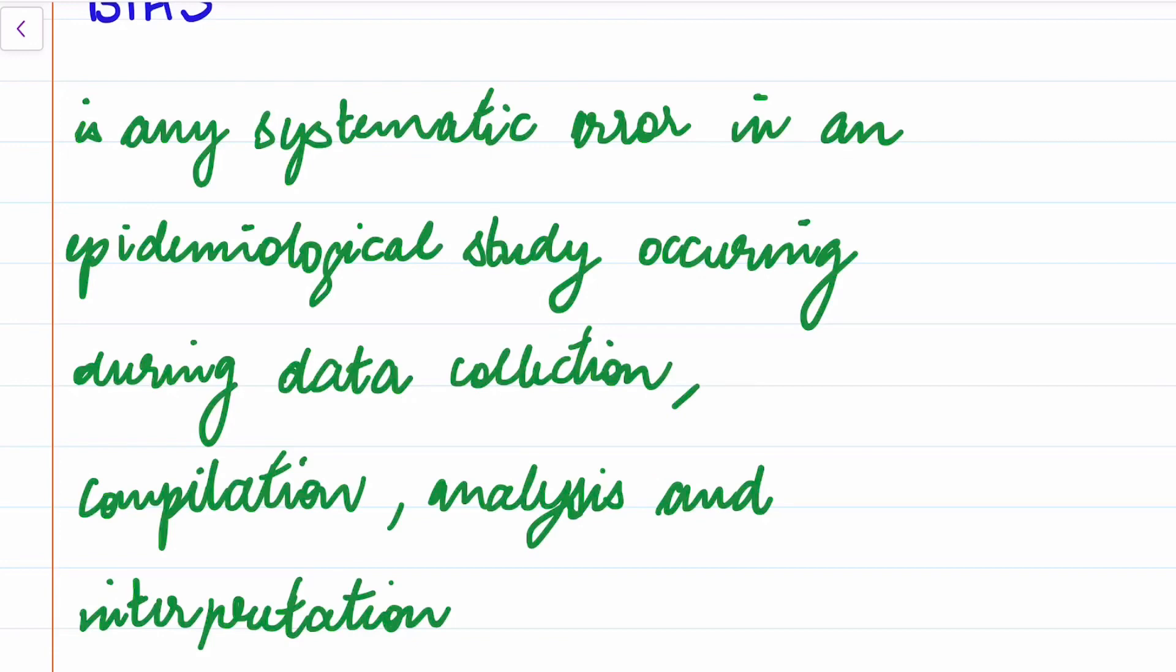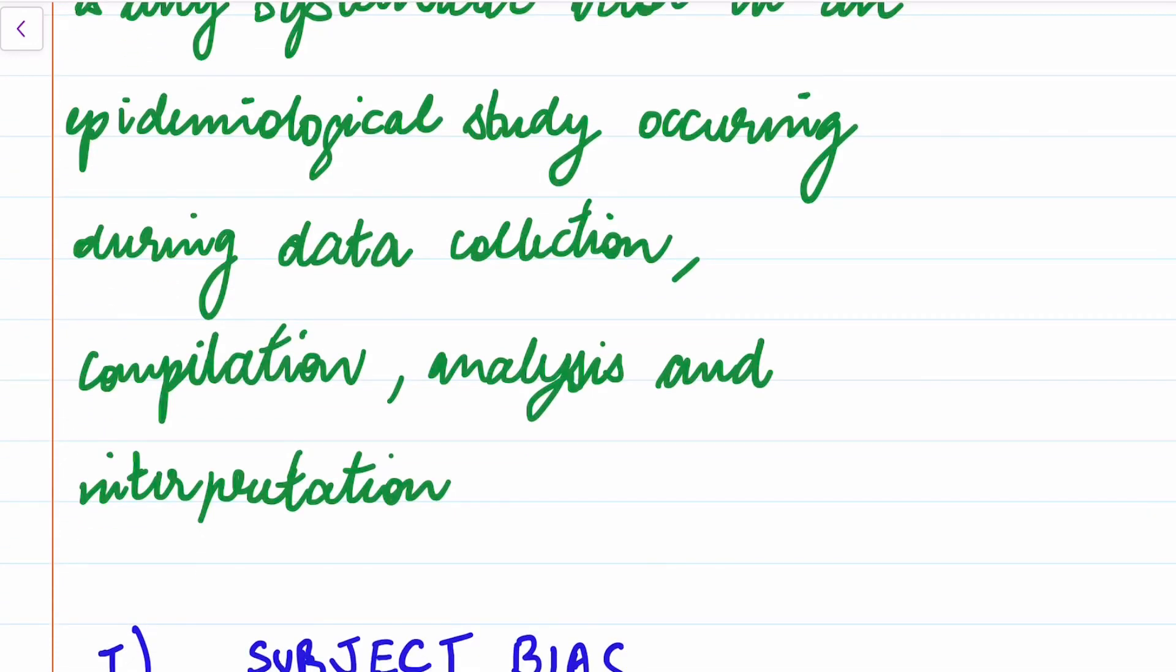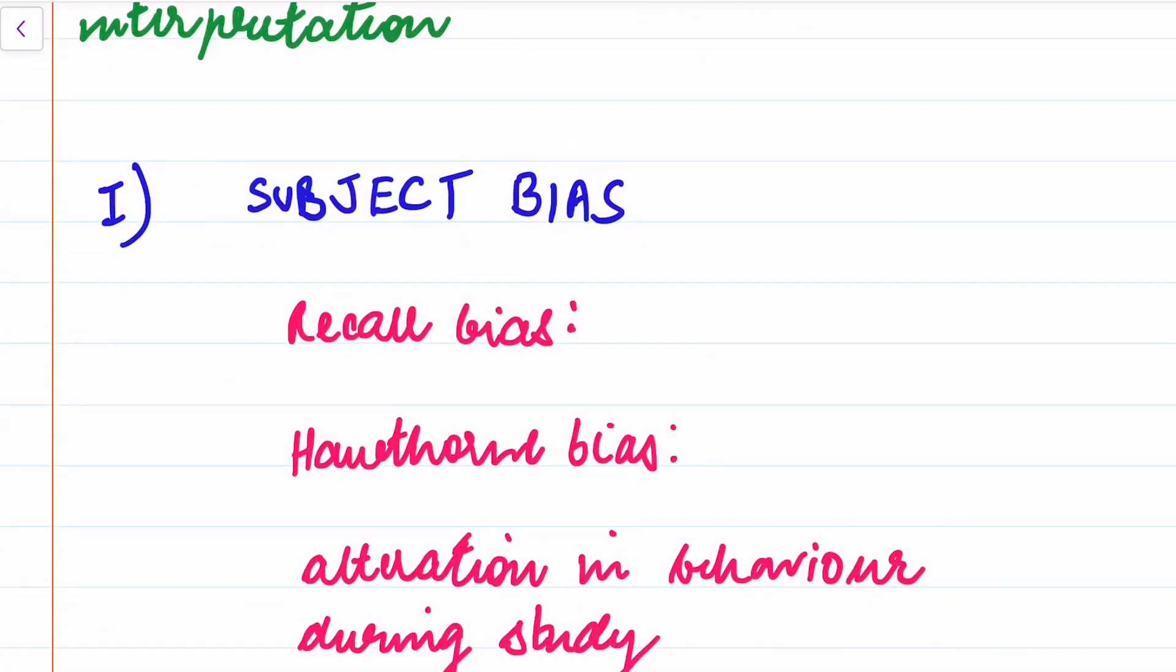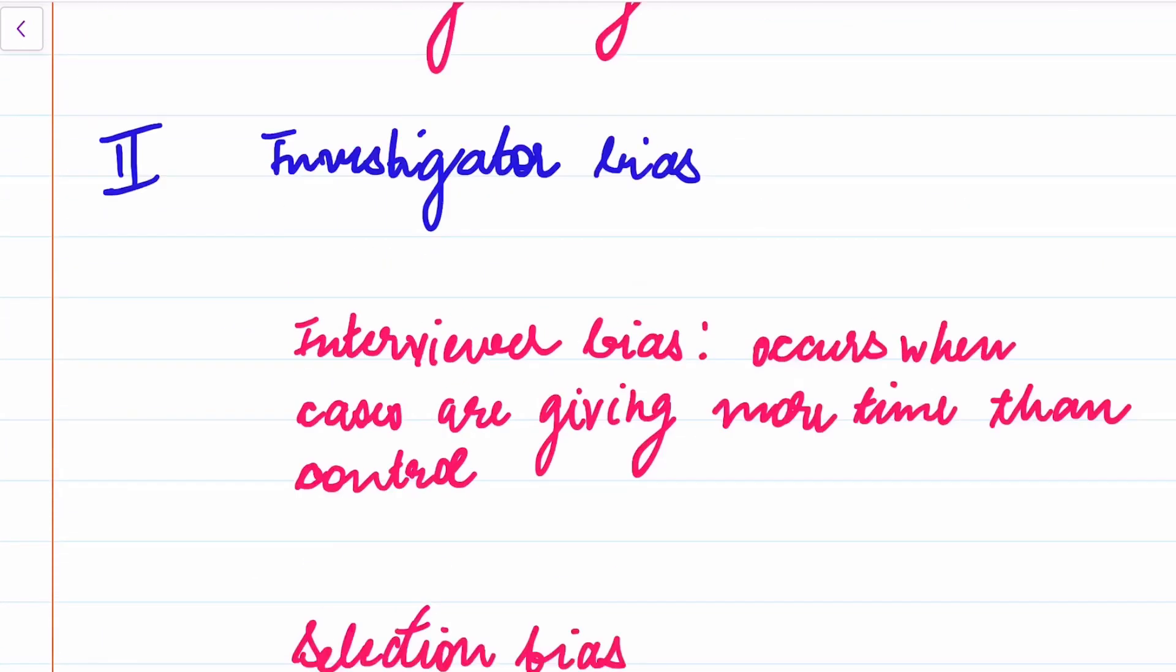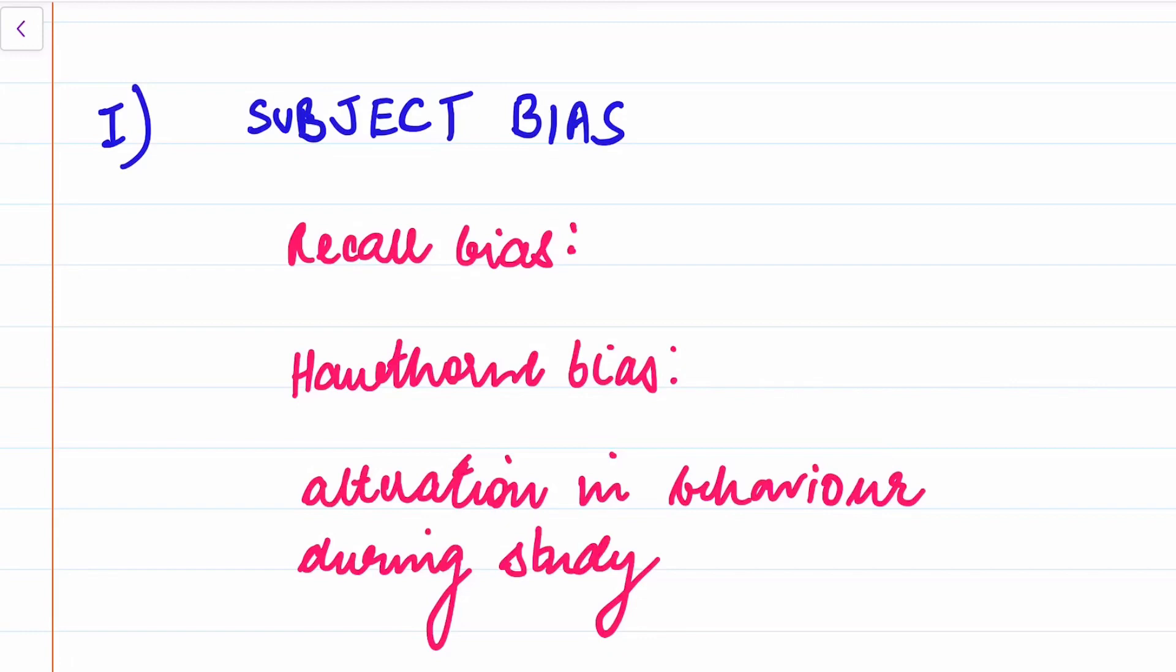Now it can be of three types: subject bias, investigator bias, or analyzer bias. Coming to subject bias, it can be of two types: recall bias or Hawthorne bias.